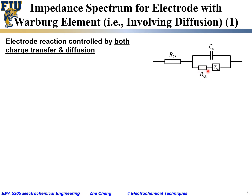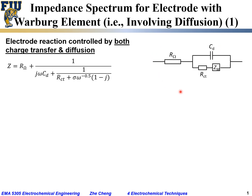We also have R_CT, the charge transfer resistance, representing the electrode charge transfer redox process. Because there can be slow diffusion that can be limiting, we introduce a Warburg element — a constant phase element with a phase shift of 0.5 — to represent diffusion. For such an equivalent circuit, the overall impedance will be the impedance for the resistor R_ohm plus the parallel combination of the remaining elements.